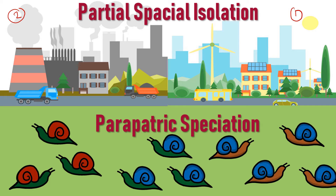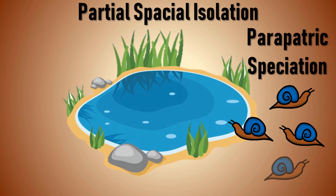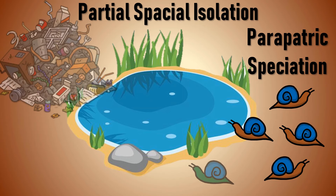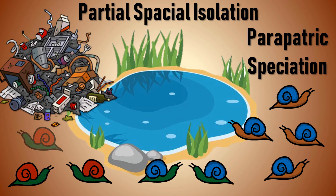Parapatric speciation is slightly different from sympatric speciation because the evolution of the new species takes place in a separate niche, whereas in sympatric speciation the evolution of both new species occurs together. A similar effect is seen with a population around a large water body, where continued differences in the species are observed due to the presence of garbage at one end.